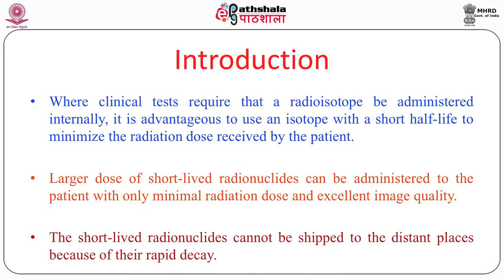Half-life is the time it takes for the activity to decay to half its original value. When we are using 5 millicurie and the half-life is 2 minutes, after 2 minutes it becomes 2.5 millicurie. If you use larger doses of short-lived radionuclides, it gives a good quality image but also a large dose. So we must use an isotope that gives minimum radiation but a good quality image.